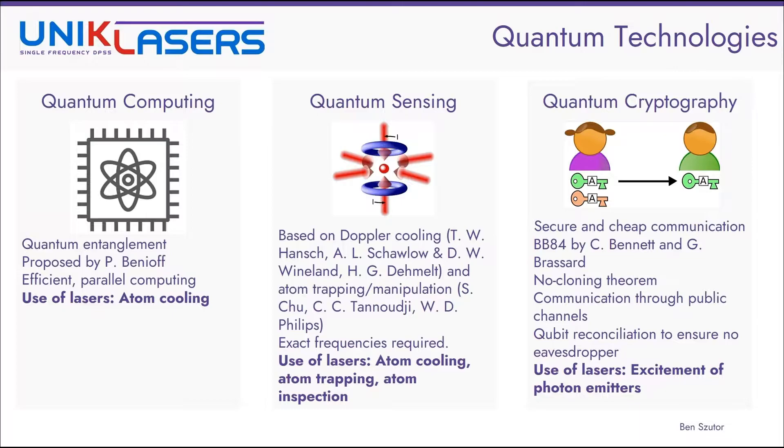The third and final group is quantum cryptography, which is a very secure and relatively cheap method of communication. One of the most popular protocols is the BB-84 proposed by Bennett and Brassard. So this protocol uses characteristics such as the no-cloning theorem. So in this case, when Alice sends a message to Bob, their information is reconciliated, so an eavesdropper is always detected. And even for these technologies, lasers can be handy for single photon emitters, which can use, for example, two-atom or two-photon absorption, which require very stable output wavelengths.